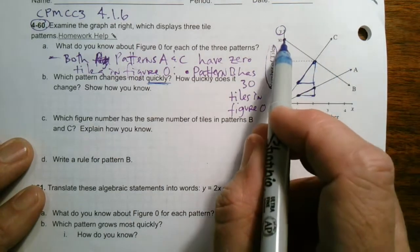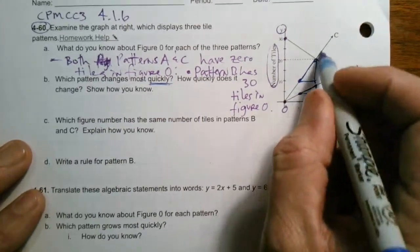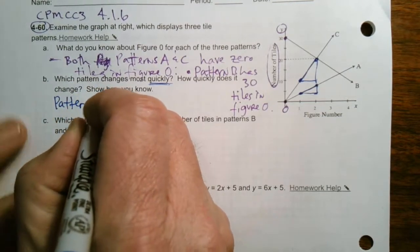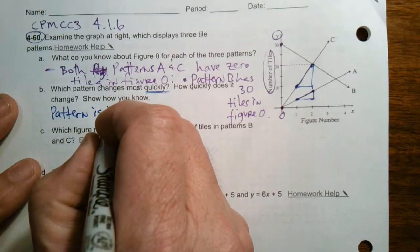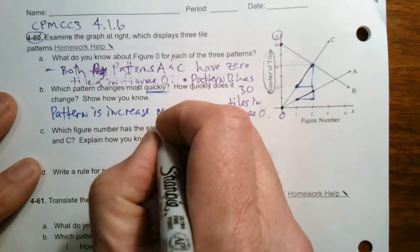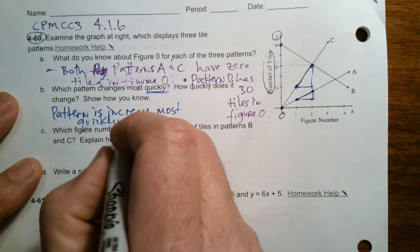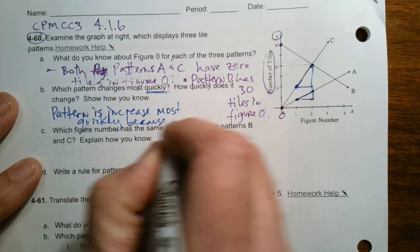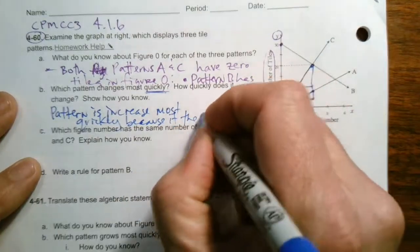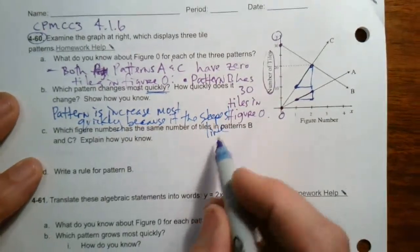And then I look at B. B actually is decreasing, not increasing. So I'm going to go ahead and say that pattern C is increasing most quickly. And why? Because it wants to know why, because it's the steepest line. It's the steepest line.